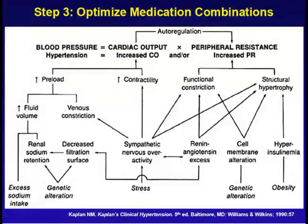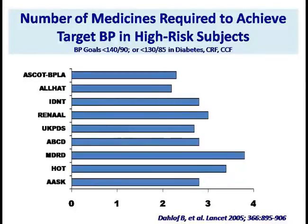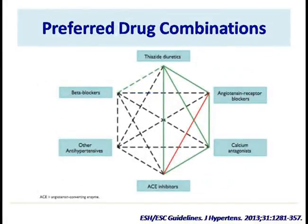The third step in management of resistant hypertension is optimization of medication combinations. Resistant hypertension involves a complex mixture: renal sodium retention, decreased filtration, sympathetic overactivity, RAS excess, cell membrane alterations, and hyperinsulinemia all contribute. Two or more drugs are required to control it. This diagram from the latest ESH guidelines shows good combinations in green and bad combinations in red. ACE inhibitor plus ARB is a bad combination; ACE inhibitor plus calcium channel blocker, and ACE inhibitor plus diuretic are good combinations.